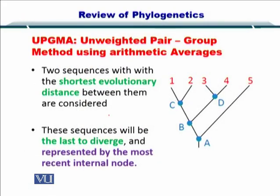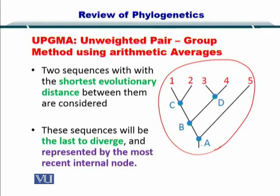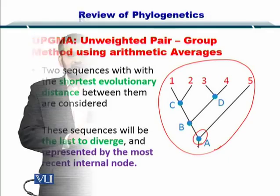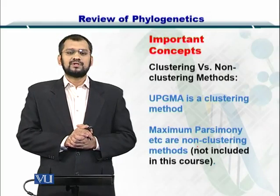UPGMA was an algorithm we studied in detail. It stands for Unweighted Pair Group Method using Arithmetic averages, and it helped us compute phylogenetic trees that are rooted and have an ancestor.